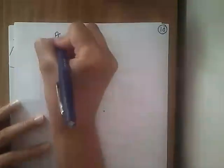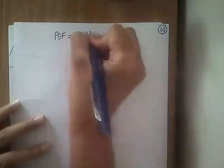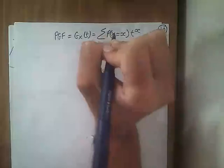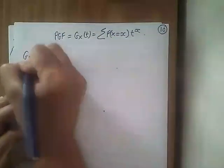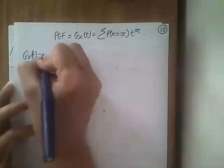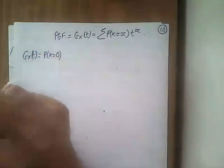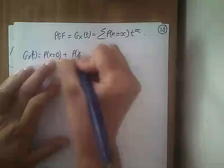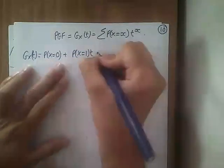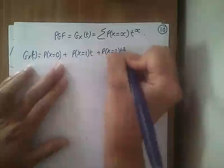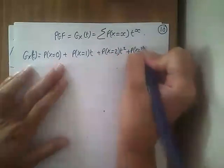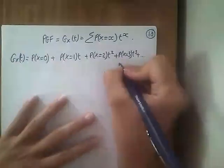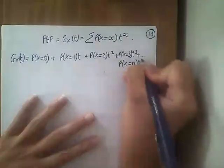Our PGF — our standard PGF — is the sum of the probability mass function times t^x. So writing that out, we have P(X=0) — since t^0 is 1 — plus P(X=1) times t, plus P(X=2) times t², plus P(X=3) times t³, up to P(X=n) times t^n.